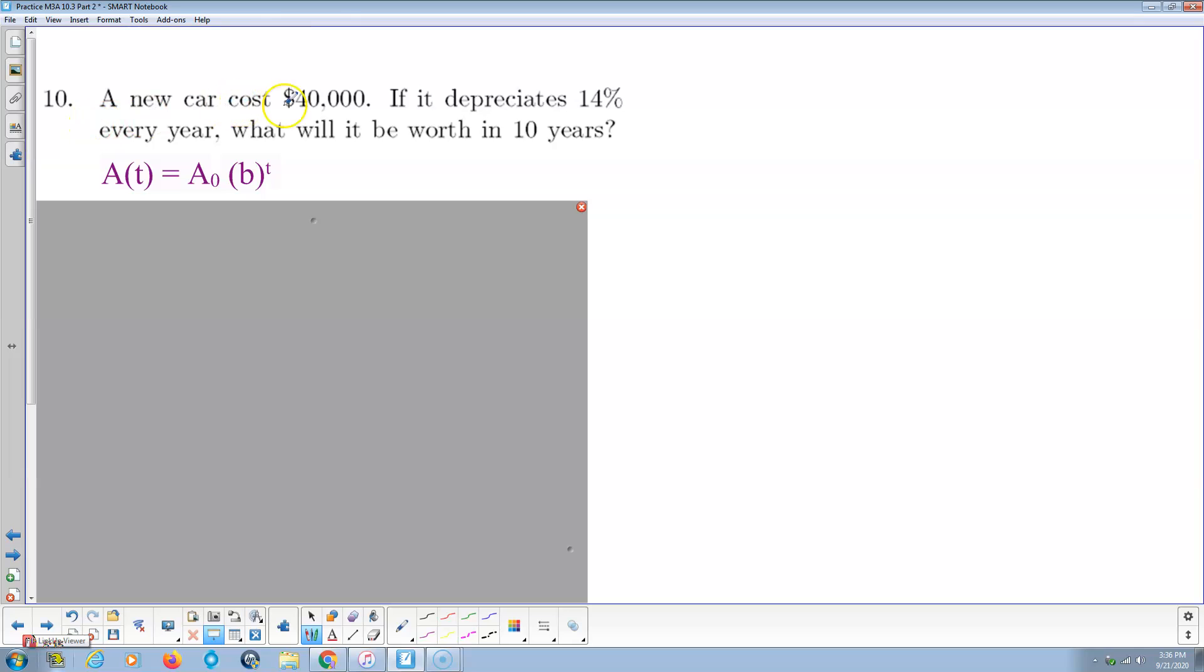Number 10. A new car costs $40,000. If it depreciates 14% every year, what will it be worth in 10 years? So again, we start with 100%. 14% of that is gone. How much is left? 86%. So there's my base, 0.86.